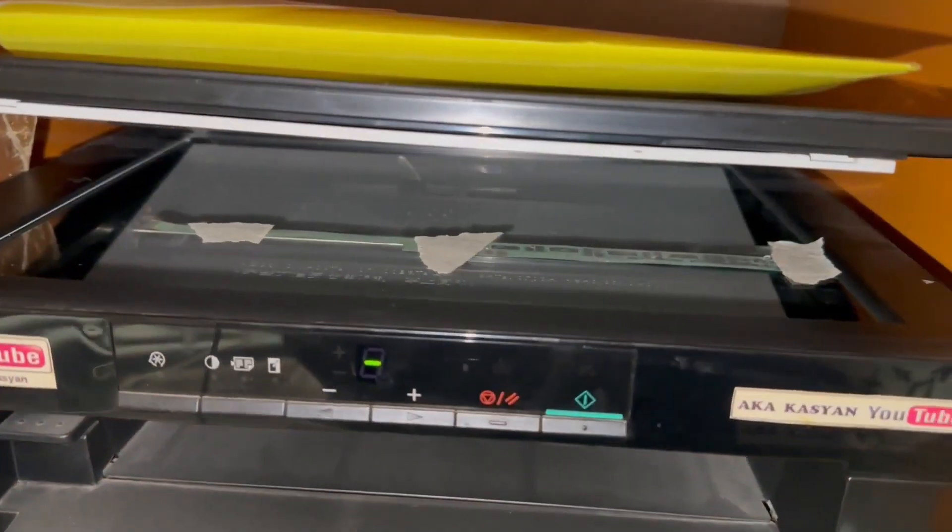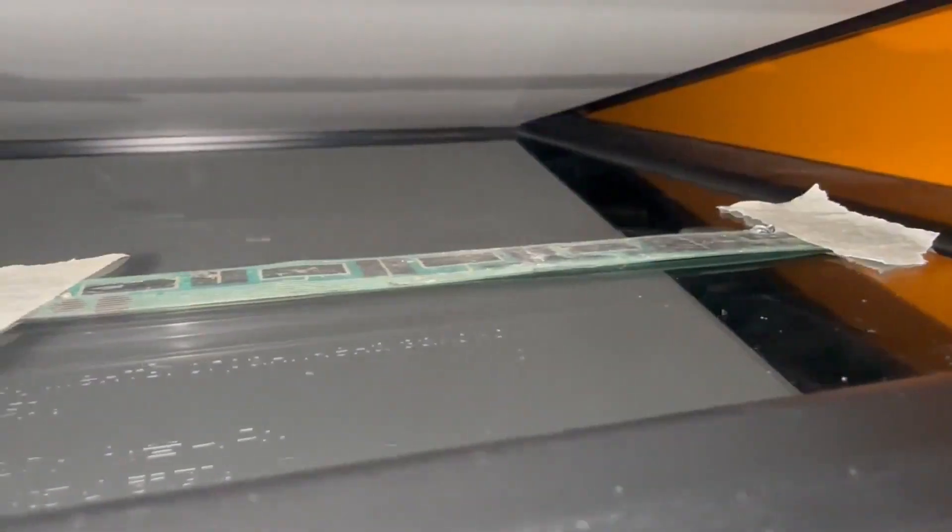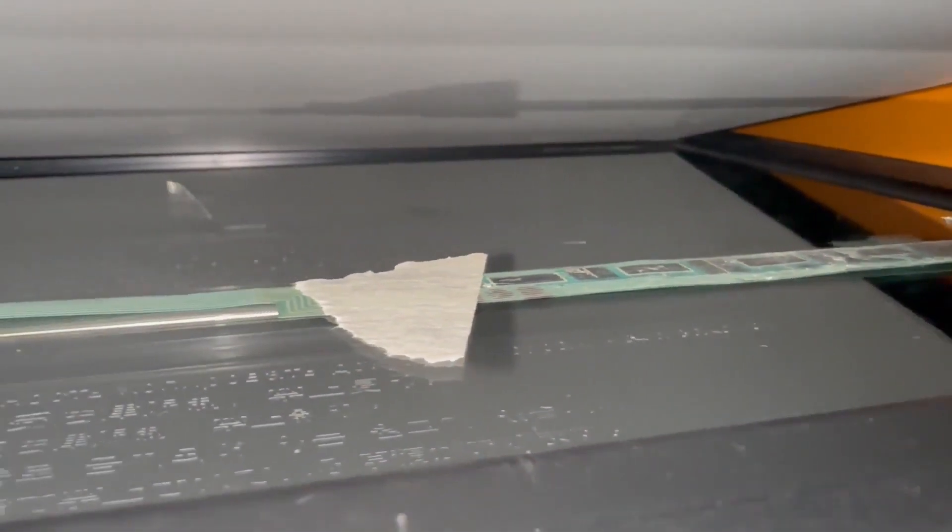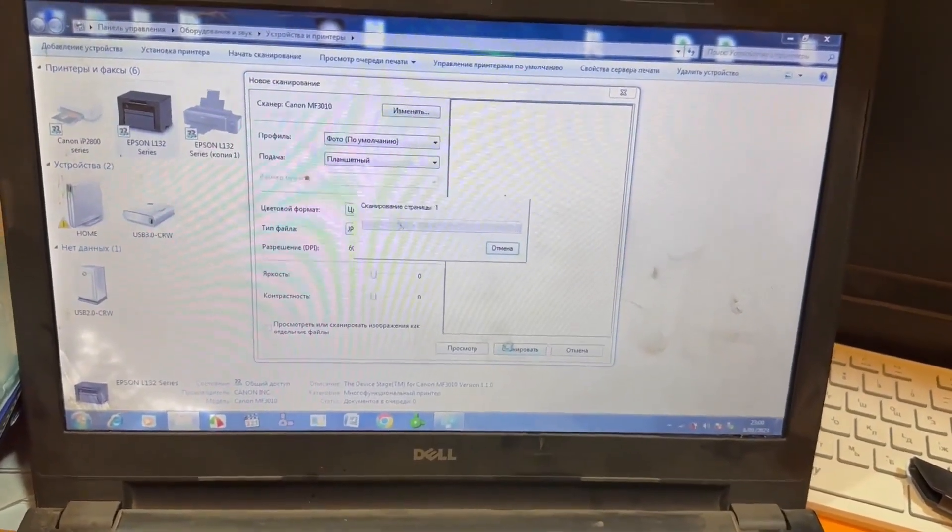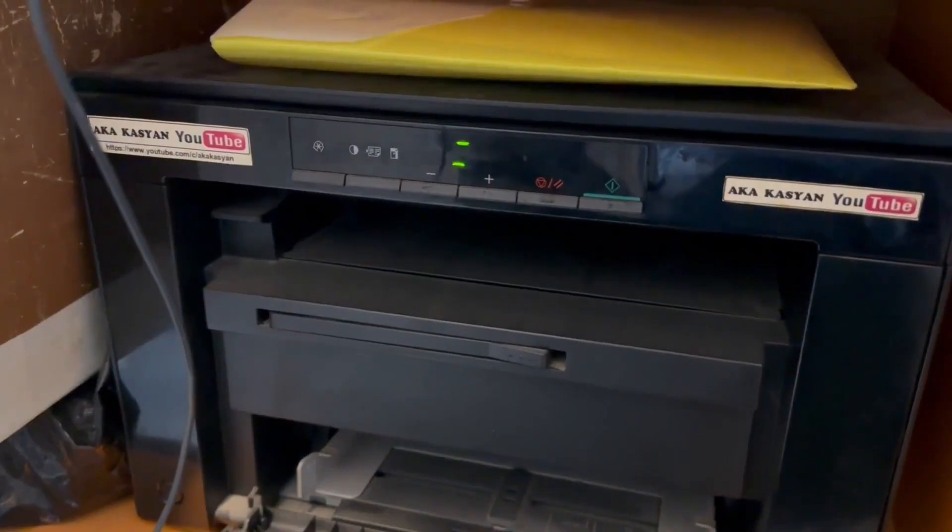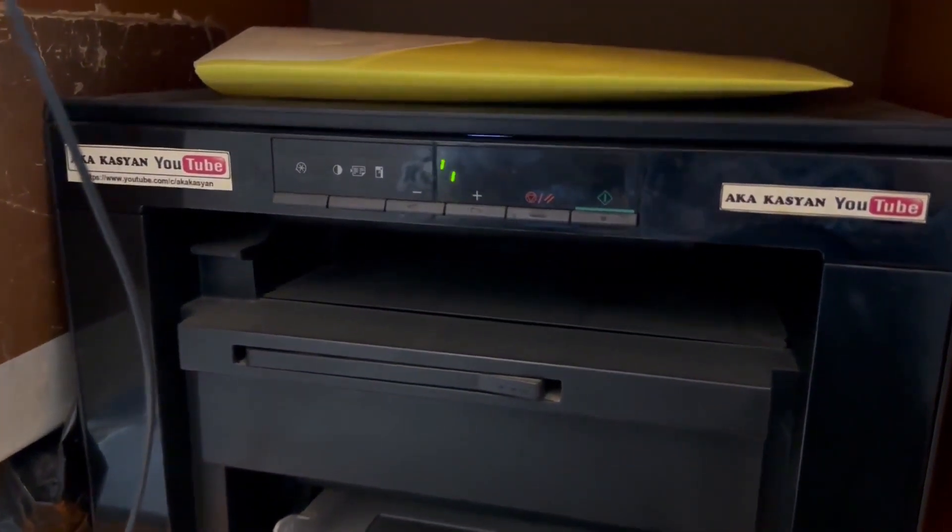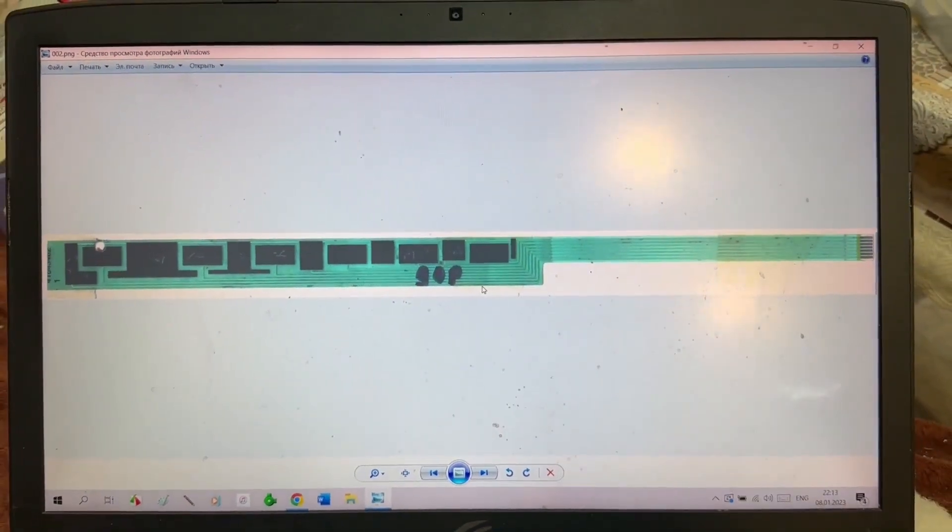Next, the cable needs to be scanned. It's thin and flexible, so it needs to be secured in the scanner. I do this using painter's tape. Then we scan it at a satisfactory resolution. In my case, it's 600 DPI. But for this board, it's more than enough. The scanner can't perfectly align such a small piece, so a little Photoshop work and the scan is ready for further procedures.